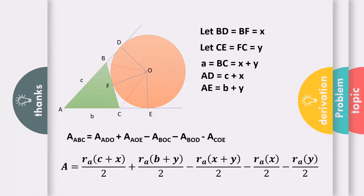For triangle ADO, the radius is perpendicular to the tangent. So we can say that side AD and side OD are the base and height of the right triangle. So we can use one-half base times height. We let AD as the base, which is c + x. The height is R_A. So R_A times (c + x) all over 2 is the area of ADO. For AOE, the height is OE, which is R_A. The base is AE, which is b + y. So the formula becomes R_A(b + y) / 2.